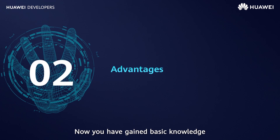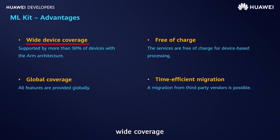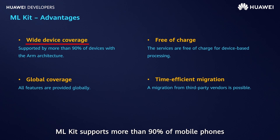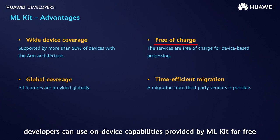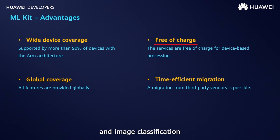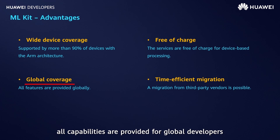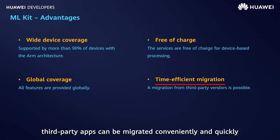Now you have gained basic knowledge about the five capabilities provided by ML Kit. What are their advantages? First, wide coverage: ML Kit supports more than 50% of mobile phones with the ARM architecture, covering almost all Android models in the market. Second, developers can use on-device capabilities for free, including face detection, text recognition, object detection and tracking, and image classification. Third, all capabilities are provided for global developers. Fourth, third-party apps can be migrated conveniently and quickly.